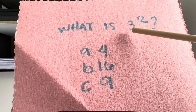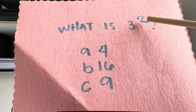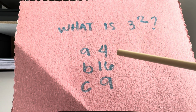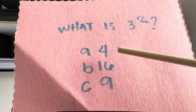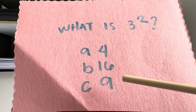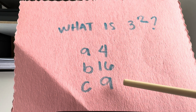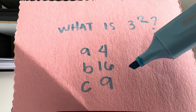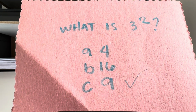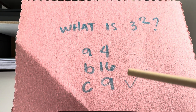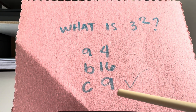Now, what is 3 squared? Is it letter A, 4? Letter B, 16? Or is it letter C, 9? Correct answer is letter C, 9. 3 squared is equal to 9.